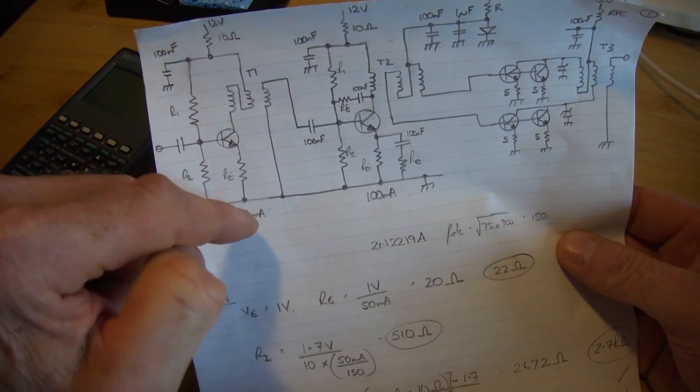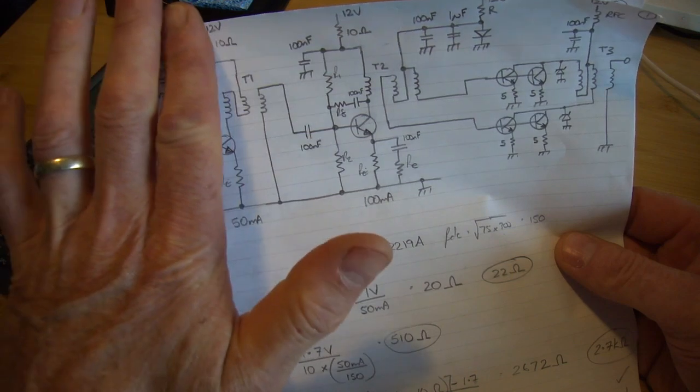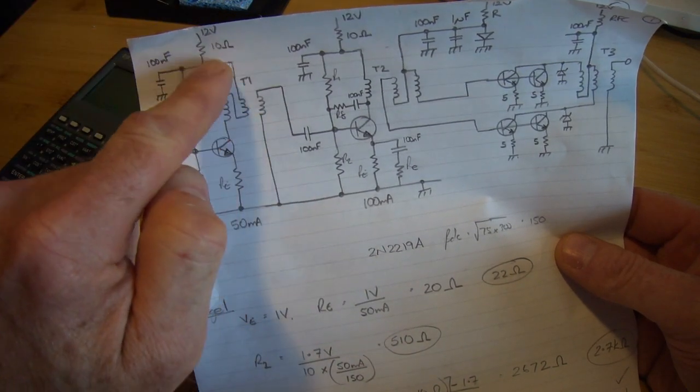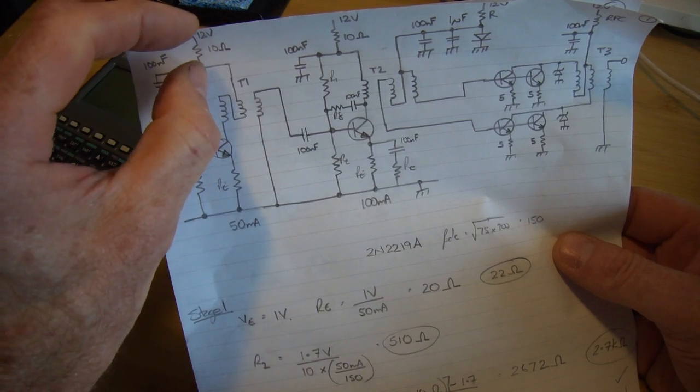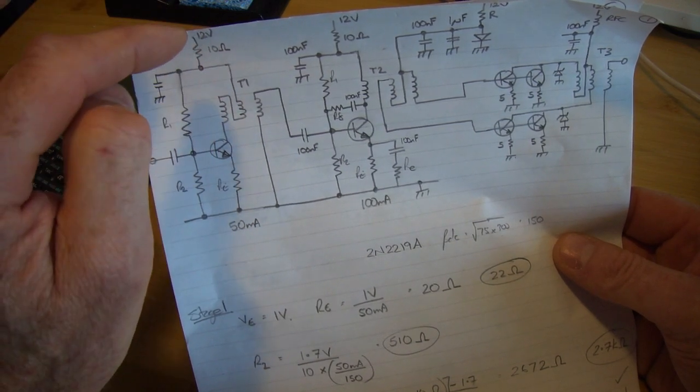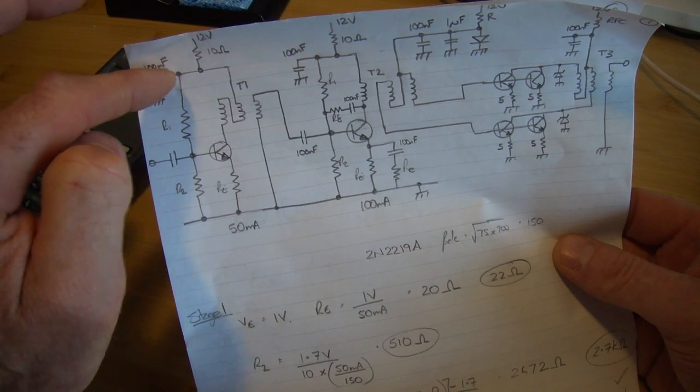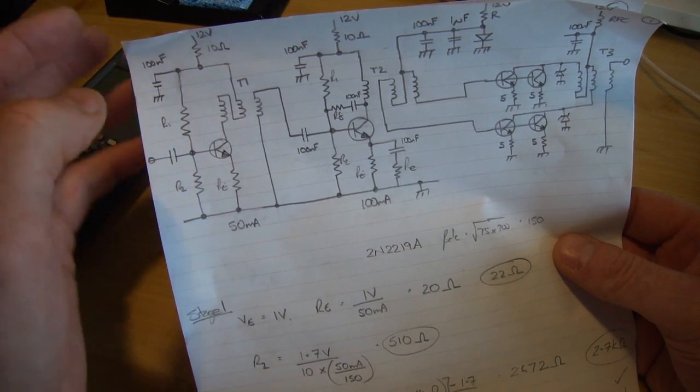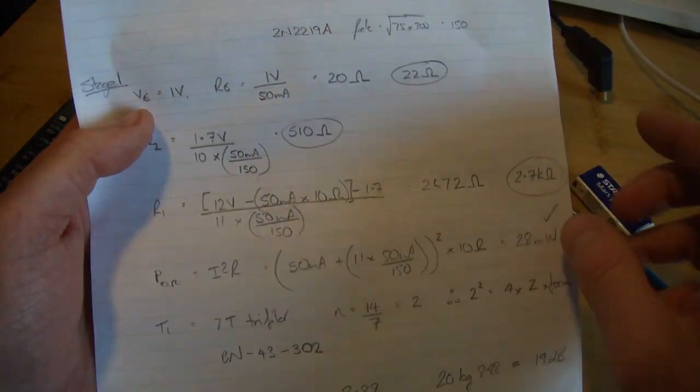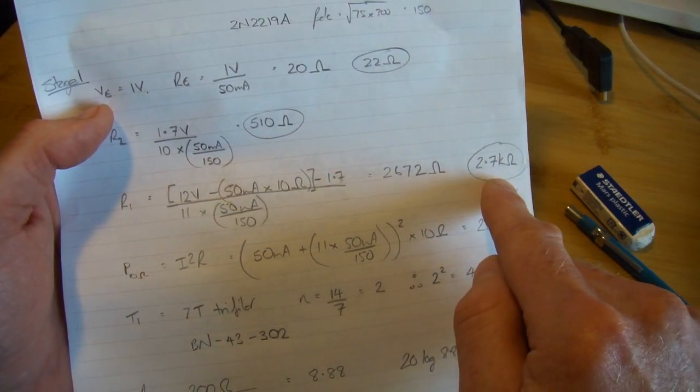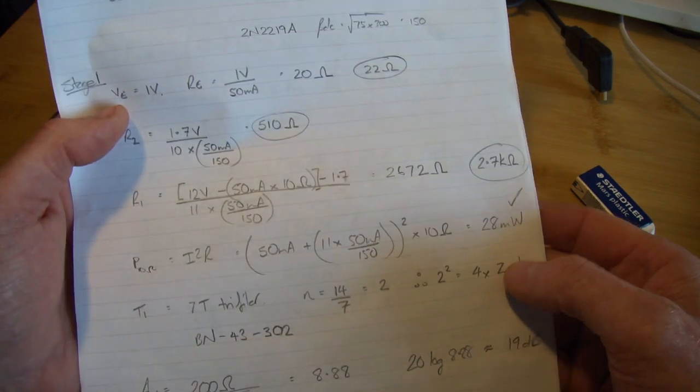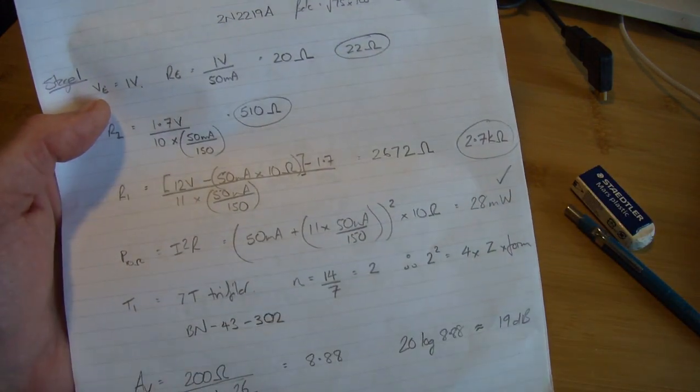And I have elected to, I'm ignoring this layer here, but the current flowing through that 10 ohm resistor, at 50mA, I am looking at that slight voltage drop across there, to then determine 12 minus that voltage drop gives us the voltage at this point, which is then being applied across R1, which is trying to be depicted here. Comes out at 2672, so I'll use 2.7K as the standard value.